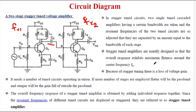Because of staggered tuning, there exists a loss of voltage gain — these are very important points. If the stagger tuned amplifier consists of many tuned circuits, then you will automatically get a flatter passband and steeper sides.